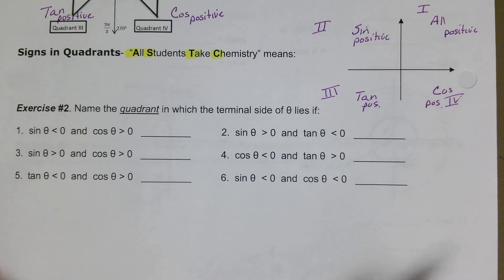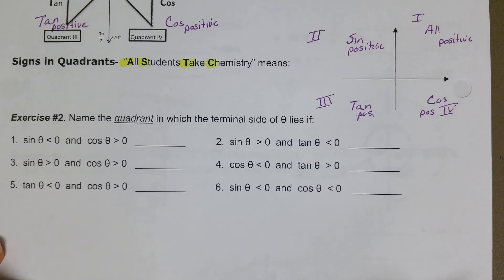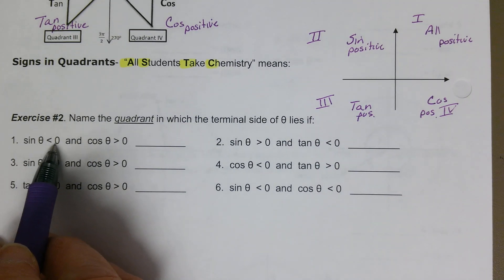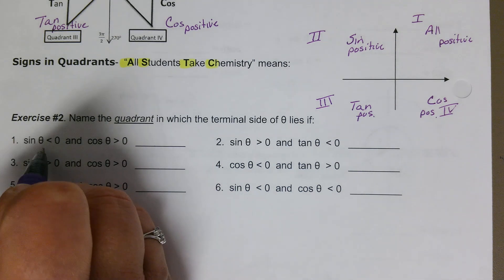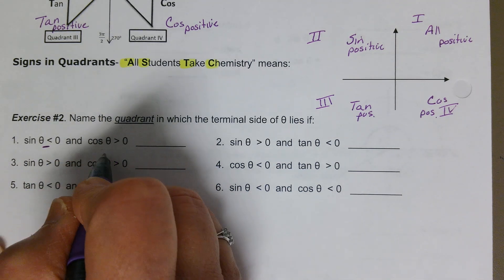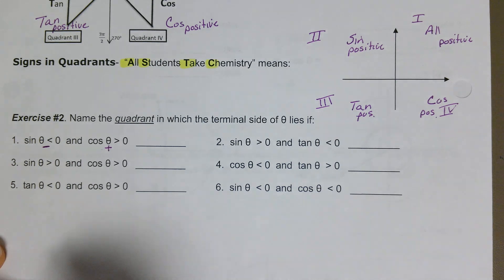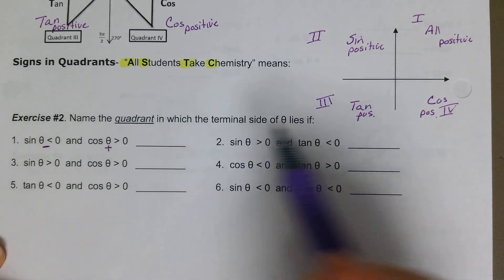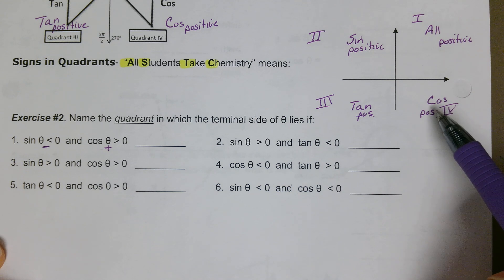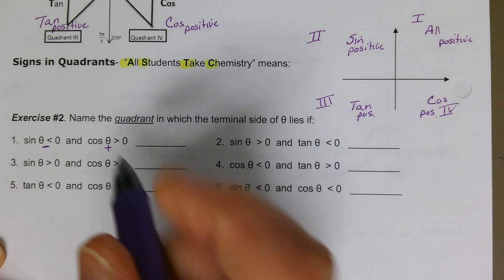Exercise number two: name the quadrant in which the terminal side of theta lies. If sine is less than zero (negative) and cosine is greater than zero (positive) — cosine is positive in quadrants one and four. Of those two, sine is negative in quadrant four.